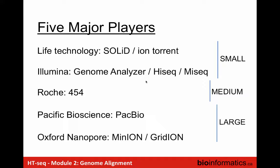There are five major players in the NGS field. Life Technologies was a major player early on, developing SOLiD and now working on Ion Torrent, though they are decreasing their sequencing output to the research community. The main player is Illumina, which provides the most sequencing to research. Both Life Technologies and Illumina provide short read sequencing, with read sizes around 100 to 300 base pairs.